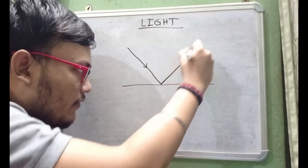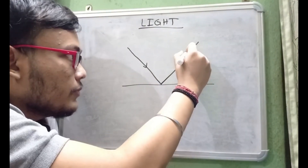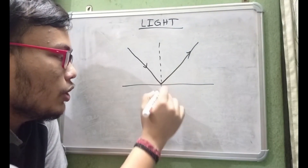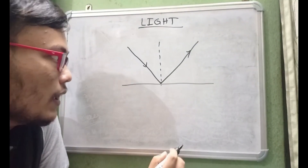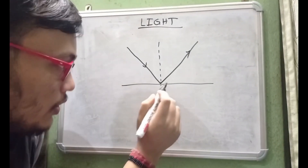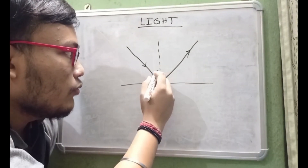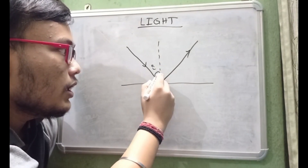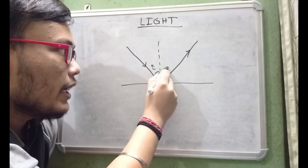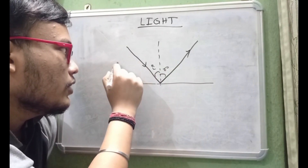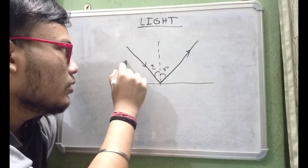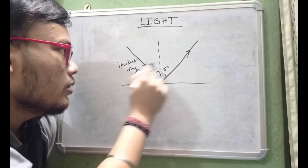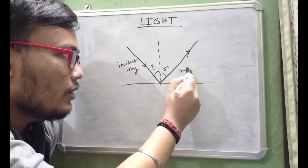If we draw a normal at the point of contact between the surface and the incident ray, the angle of incidence becomes equal to the angle of reflection. This is the incident ray and this is the reflected ray — this is known as the law of reflection.